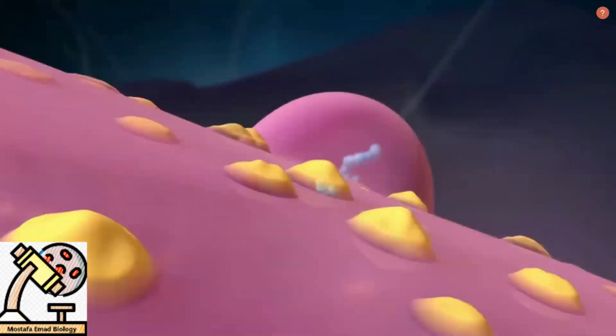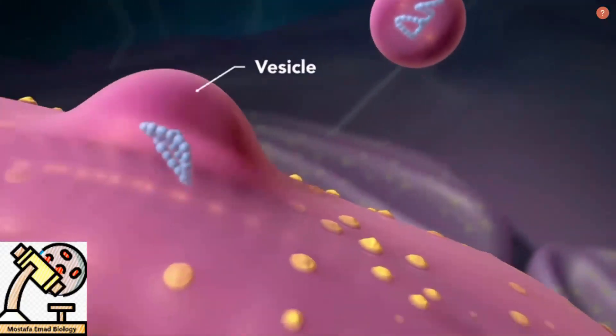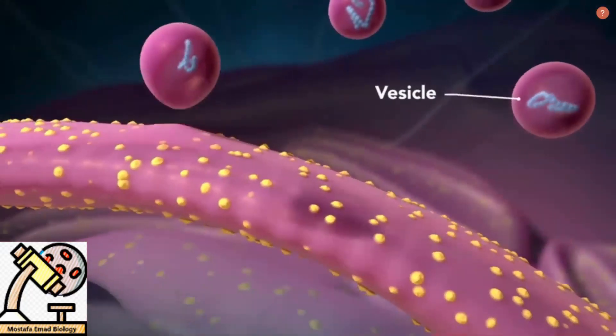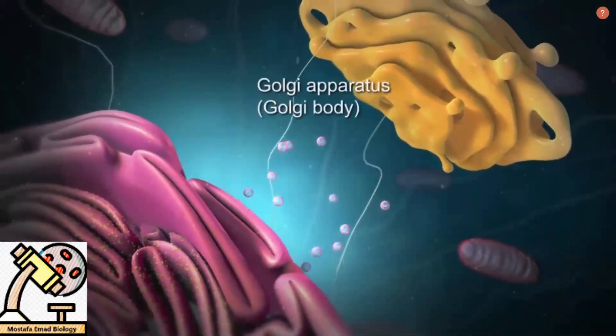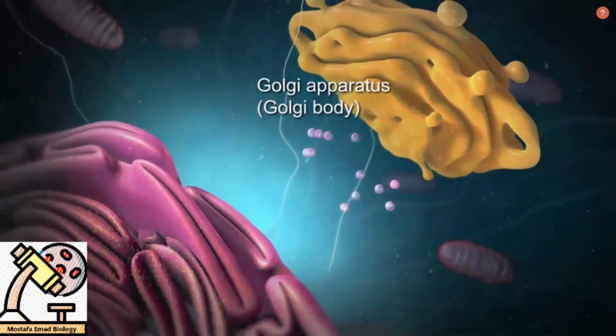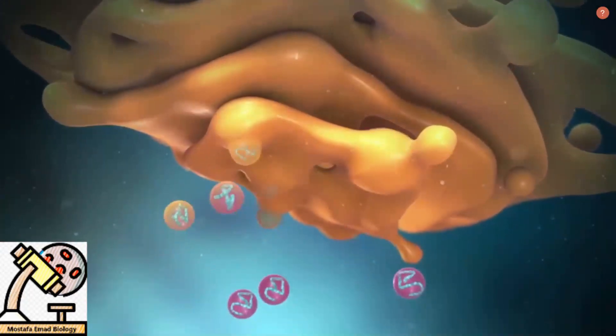Proteins and other materials emerge from the endoplasmic reticulum in small vesicles, where the Golgi apparatus, sometimes called the Golgi body, receives them.